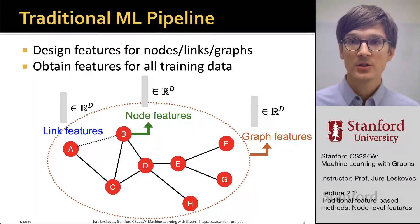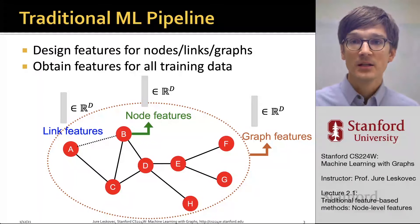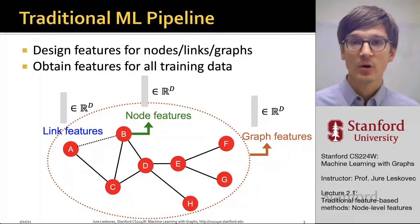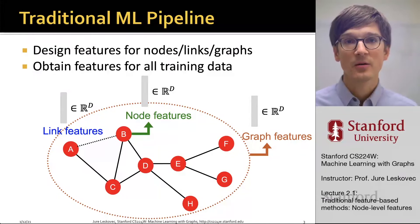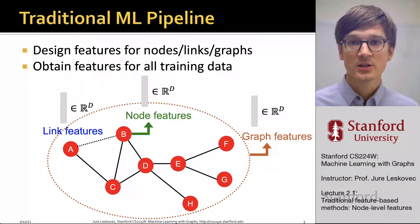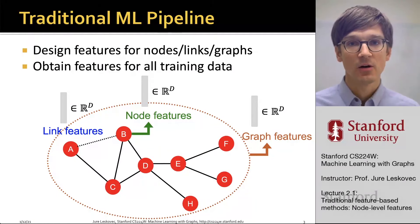At the same time, we also want to be able to create additional features that will describe how this particular node is positioned in the rest of the network and what is its local network structure. And these additional features that describe the topology of the network, of the graph, will allow us to make more accurate predictions. So this means that we will always be thinking about two types of features: structural features, as well as features describing the attributes and properties of the nodes.